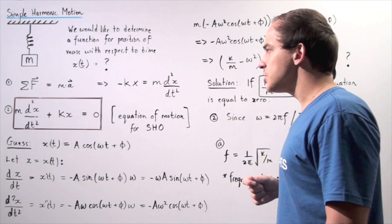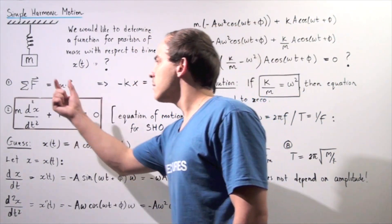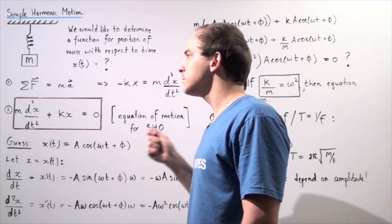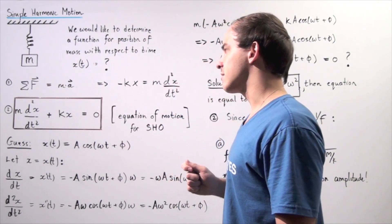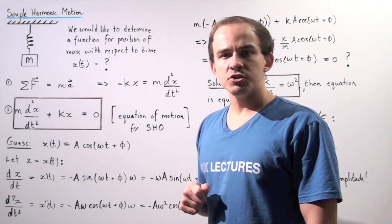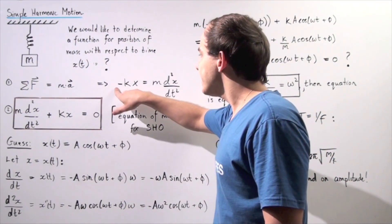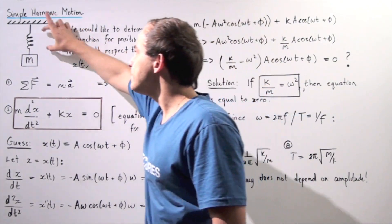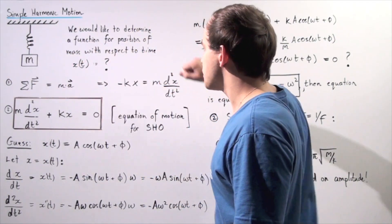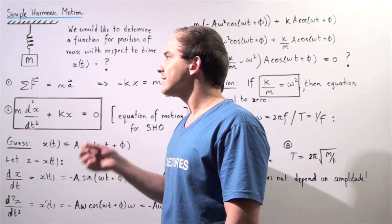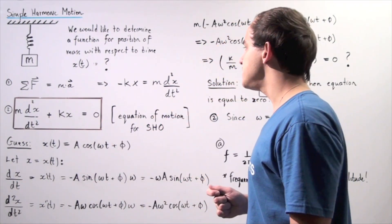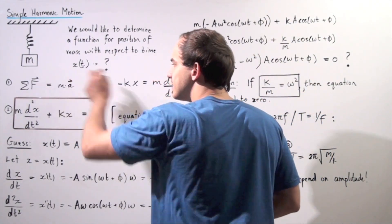To answer this question, let's begin with Newton's second law of motion. The sum of the forces acting on the mass along the y-axis equals the mass multiplied by the object's instantaneous acceleration at time t. The net force is simply Hooke's Law: negative k times x, where k is the stiffness of the spring, x is the displacement from the equilibrium point, and the negative sign means the restoring force points opposite to the displacement. This equals mass times instantaneous acceleration.